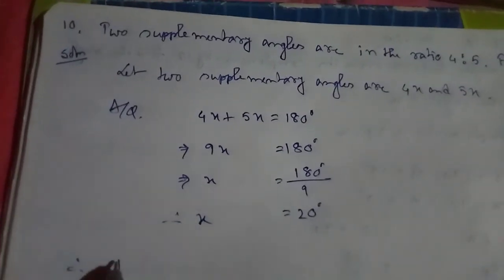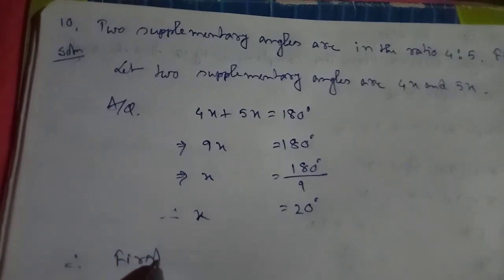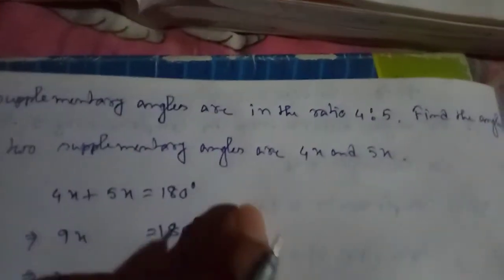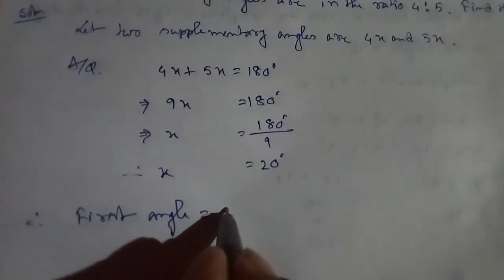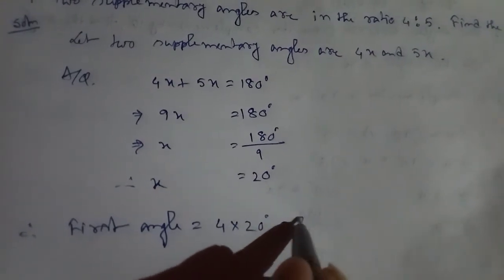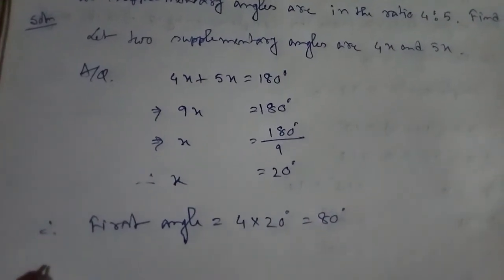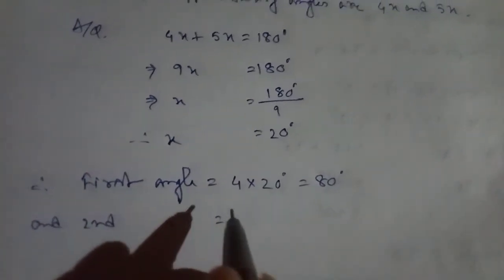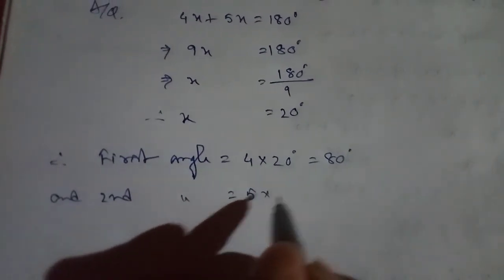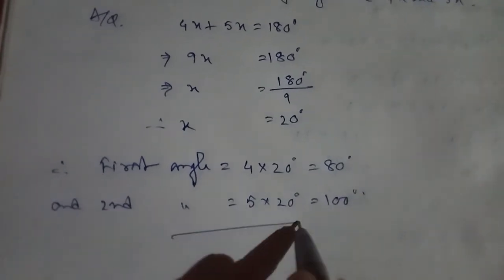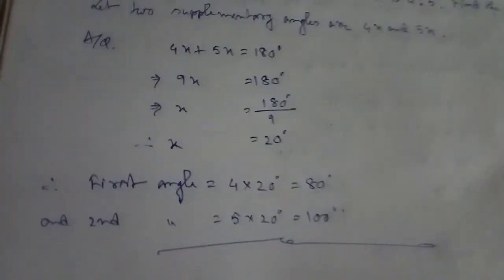Therefore, the first angle is 4x, which equals 4 times 20, giving 80 degrees. The second angle is 5x, which equals 5 times 20, giving 100 degrees.